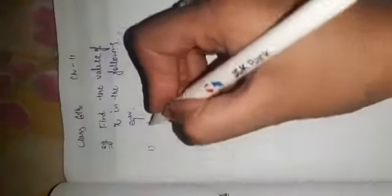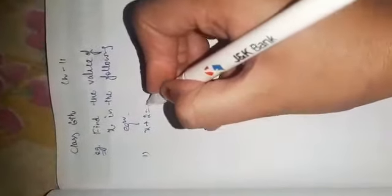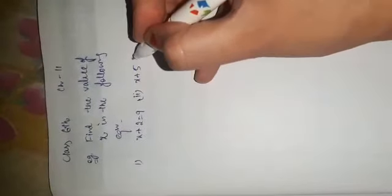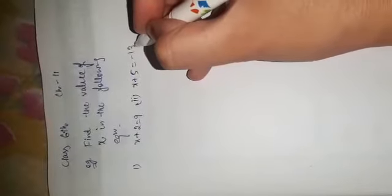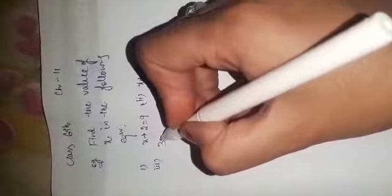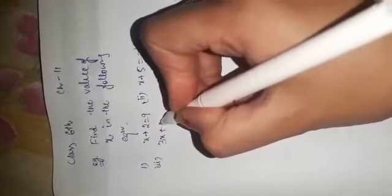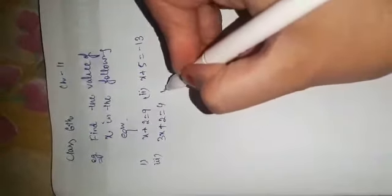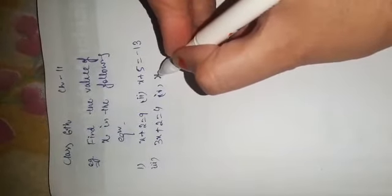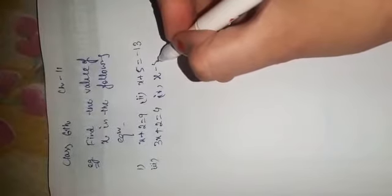Now I am going to solve the examples. Find the value of x. How we can find the value of x in the following equations. Your equation is x plus 2 is equal to 9. Second, x plus 5 is equal to minus 13. Third one is 3x plus 2 is equal to 4. And fourth part is x minus 5 is equal to 19.